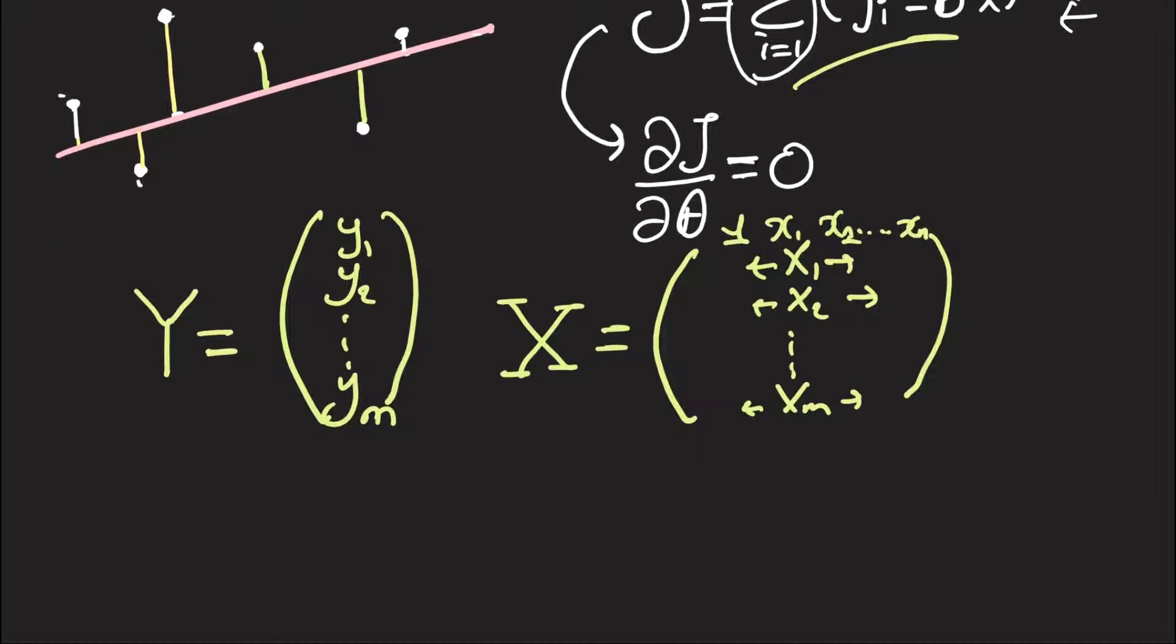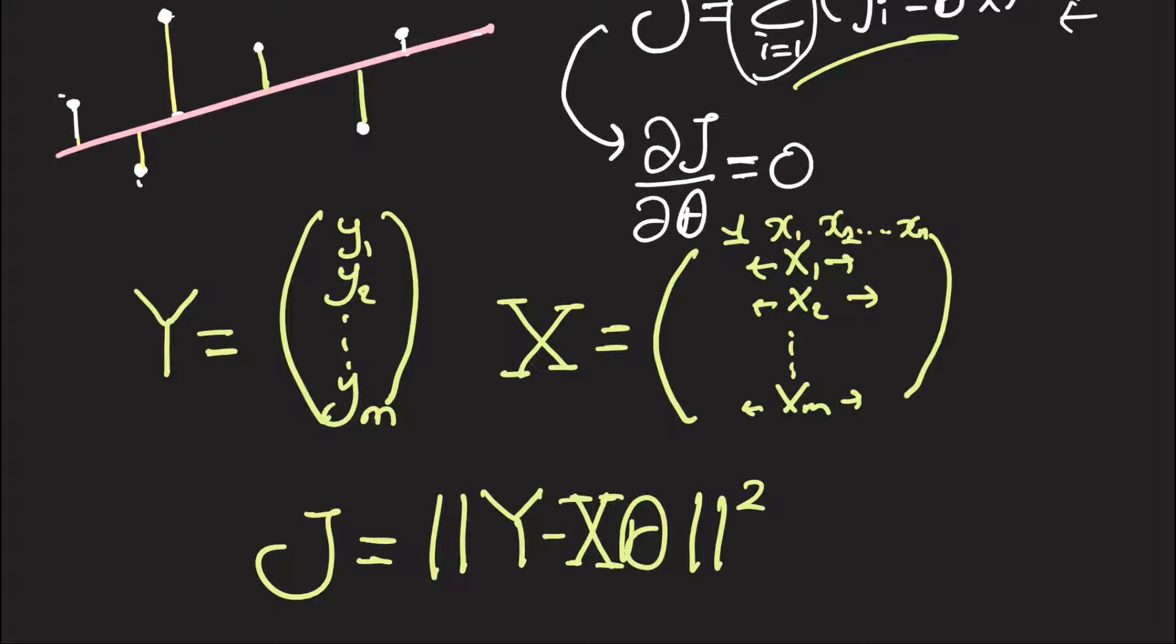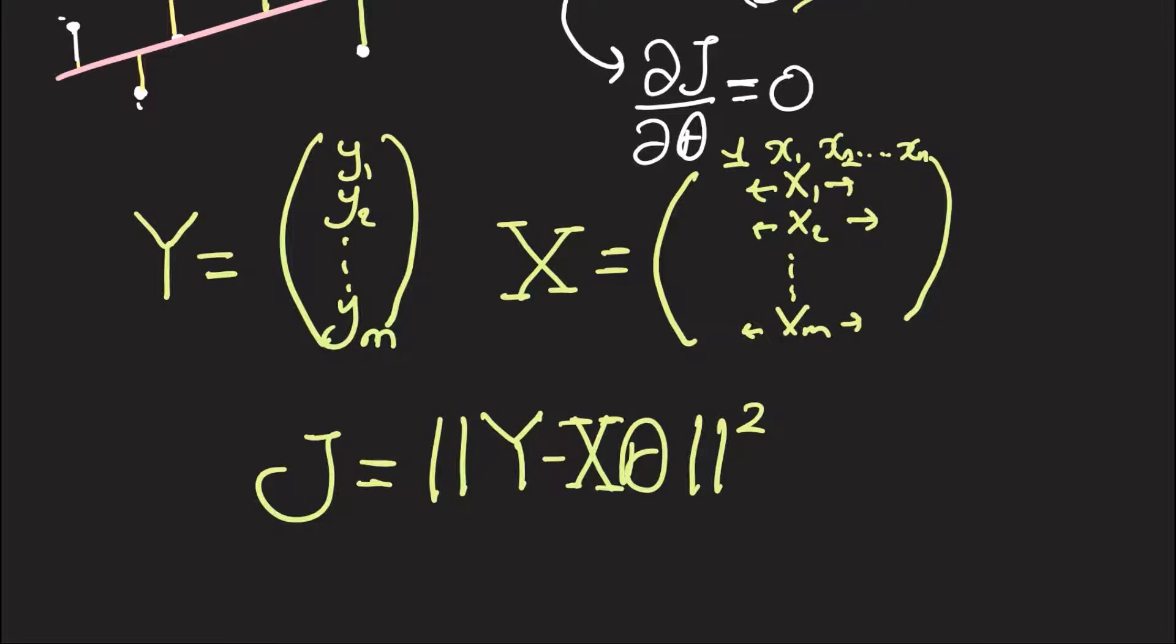So once we have these two defined, we can write down our cost function as J equals the square of the magnitude of Y capital minus X as our design matrix times theta. And here we know that the square of the magnitude of some vector Q is just Q transpose Q.